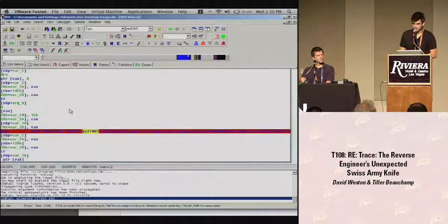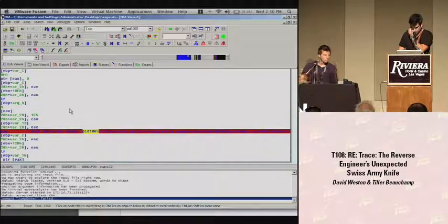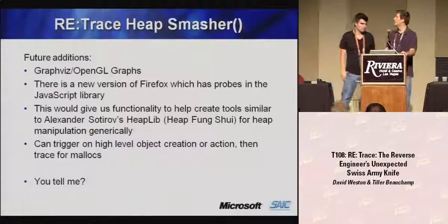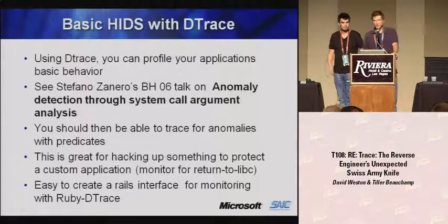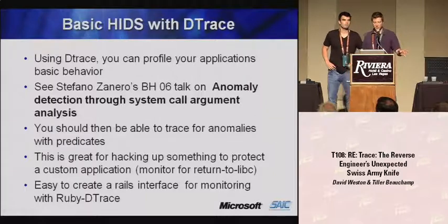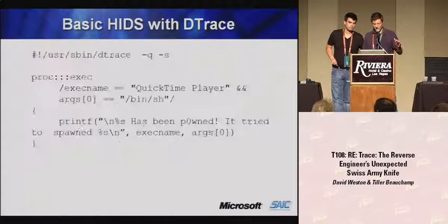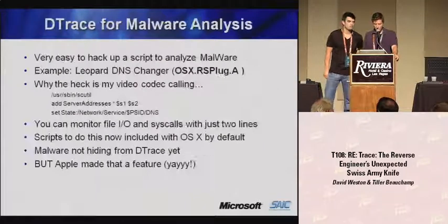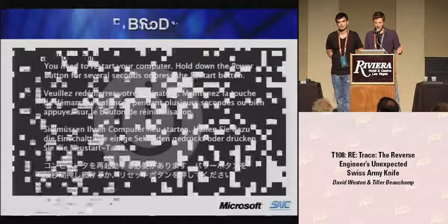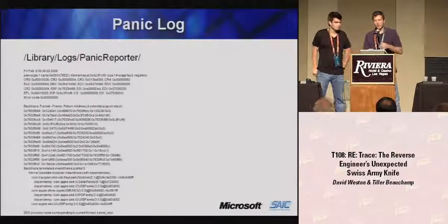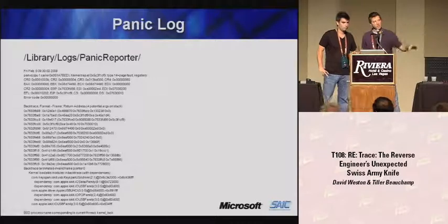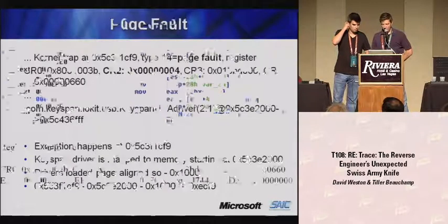We have some sections on using this defensively — stopping attacks based on seeing system call patterns the application isn't supposed to do, though you have performance issues there. We also talk about doing some kernel-level stuff: when you see a kernel panic and have no idea what happened, there are logs that get dumped and give you a lot of information so you don't actually need to do traditional kernel debugging, though if you do you have to set up a remote server.